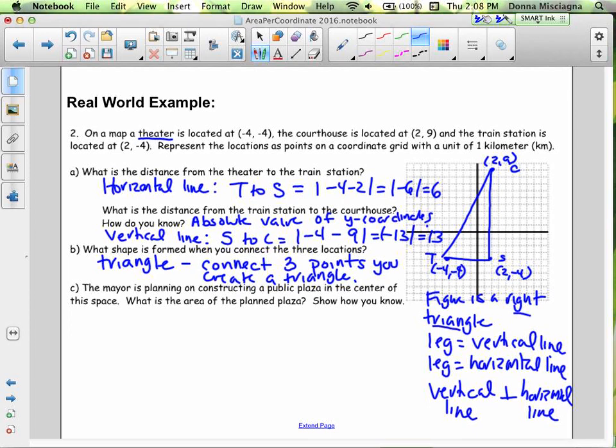So to find the area of a right triangle, it's just going to be one half times leg times leg. That will give us the area of that triangle. And so that's going to be one half times 6 times 13. Half of 6 is 3, 3 times 13 is 39. Let's not forget our units - 39 kilometers. That would be the area of that plaza.